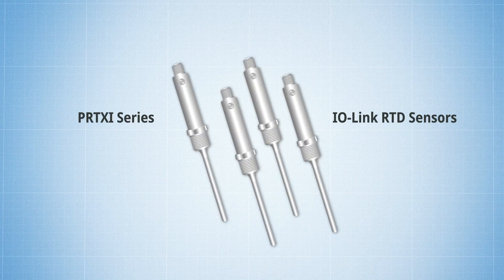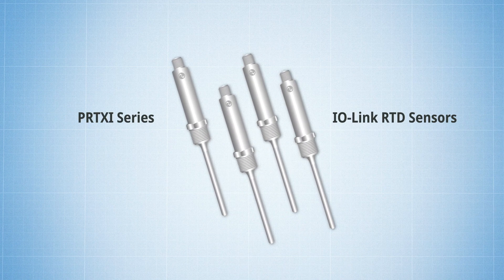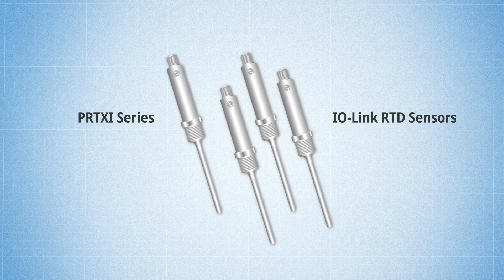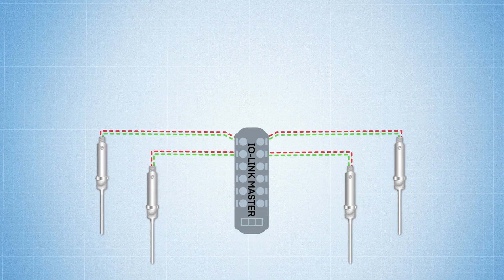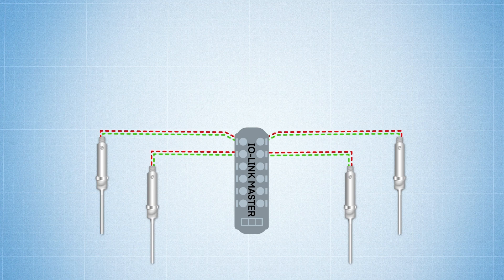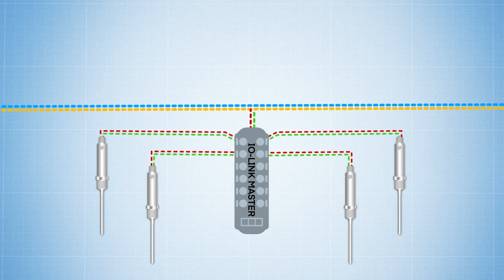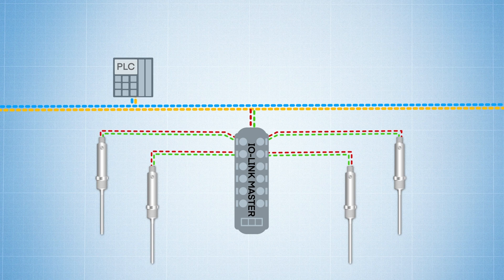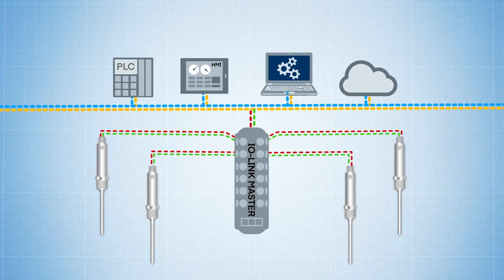Here's how it works. Field devices like these Omega PRT-XI IO-Link RTD sensors transmit and receive a digital signal to and from the IO-Link master. The IO-Link master transmits that sensor data over a network, field bus, or backplane bus to PLCs, HMIs, or up into the cloud.